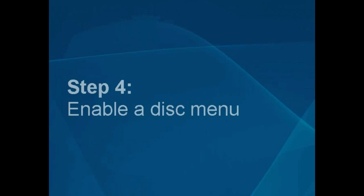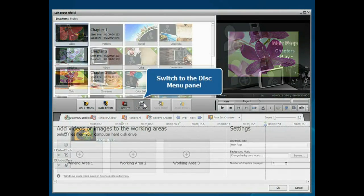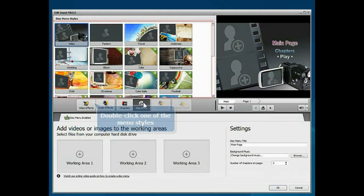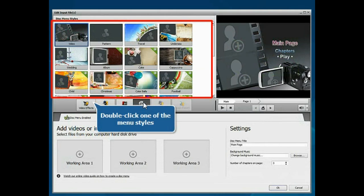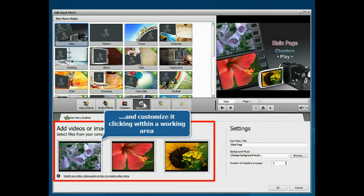Step 4: Enable a Disk Menu. Switch to the Disk Menu panel. Double-click one of the available menu styles and customise it if necessary.